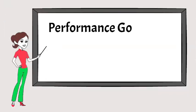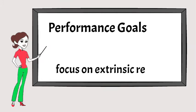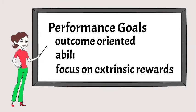Performance goals are focused on outperforming others and attention is directed to outcomes. Ability is considered fixed and the focus is on extrinsic rewards.